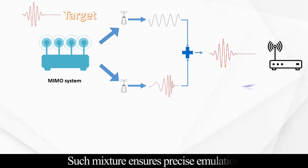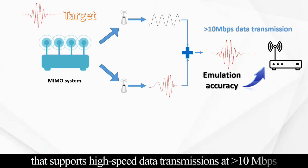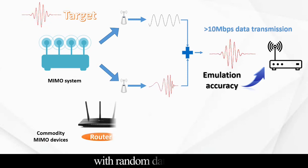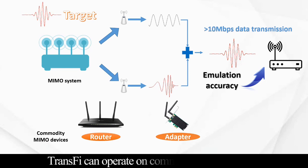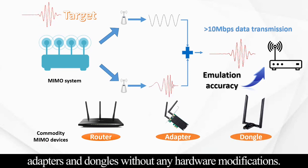Such mixture ensures precise emulation that supports high-speed data transmissions at greater than 10 megabits per second with random data payloads. TransFi can operate on commodity Wi-Fi routers, adapters, and dongles without any hardware modifications.